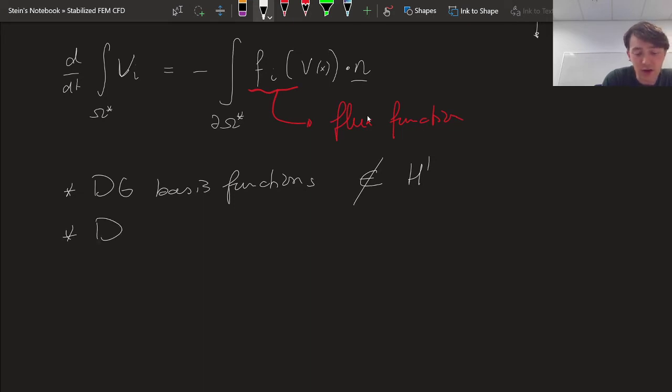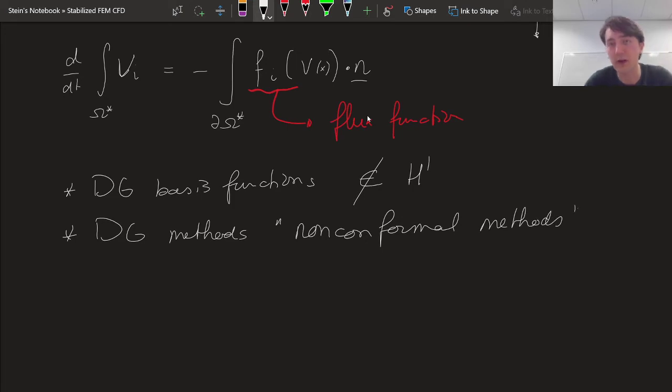Discontinuous Galerkin methods are not subspaces of the H1 Sobolev space. That was precisely the Sobolev space we needed for our partial differential equation. So we're going to have to play some tricks. That is why we call DG methods non-conformal methods.